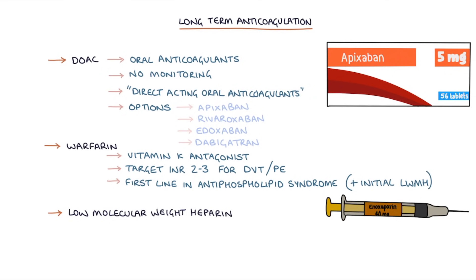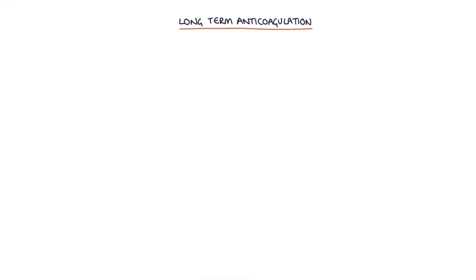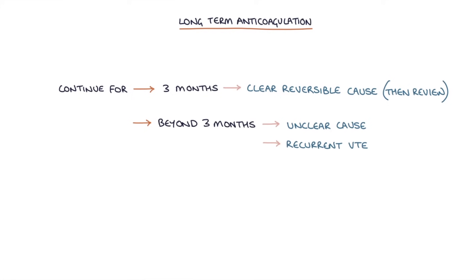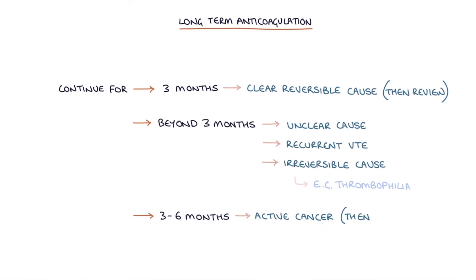Low molecular weight heparin is the first line anticoagulant in pregnancy. Patients with a DVT or PE should continue anticoagulation for 3 months if there's a clear reversible cause and then it's reviewed. Beyond 3 months — if there's an unclear cause, recurrent venous thromboembolism, or an irreversible underlying cause such as thrombophilia — anticoagulation is often continued for 6 months in practice, and for 3–6 months in active cancer before review.